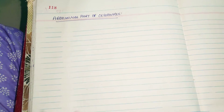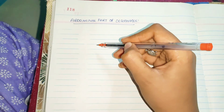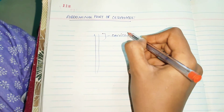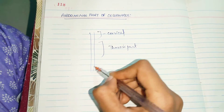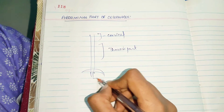In this video we are going to talk about the abdominal part of the esophagus. The esophagus is divided into three parts: the cervical part, the thoracic part in the middle, and the lower part below the diaphragm which is called the abdominal part. Our main concern today is about this abdominal part of the esophagus, which is below the diaphragm.